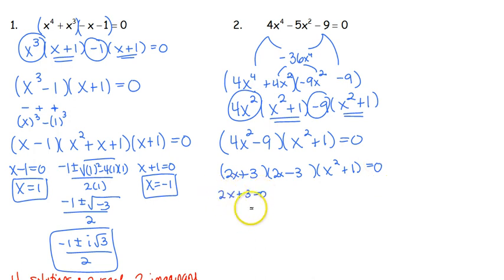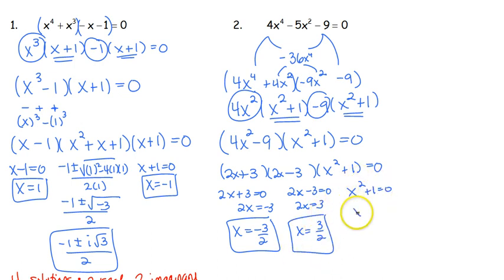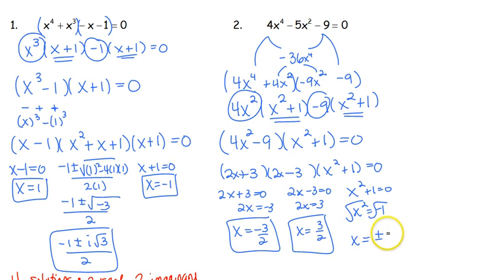We set each piece equal to 0. Move the 3 over to get 2x equals negative 3, divide by 2, and we've got x equals negative 3 halves. Set our second piece equal to 0, move your 3 over where it's positive, divide, and we've got x equals positive 3 halves. And last, x squared plus 1 equals 0 — we move the 1 over where it becomes negative, we square root, and we've got x equal to plus or minus i. So we've got two real solutions and two imaginary solutions again — we had a fourth degree, so we should have expected four solutions.